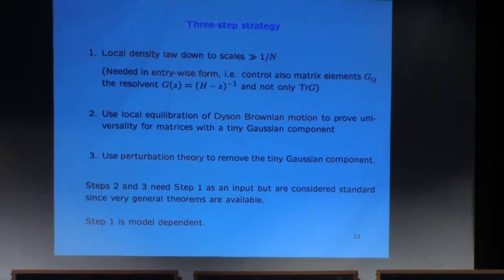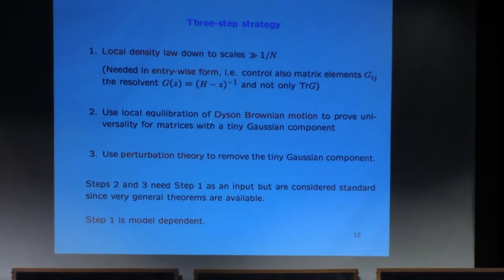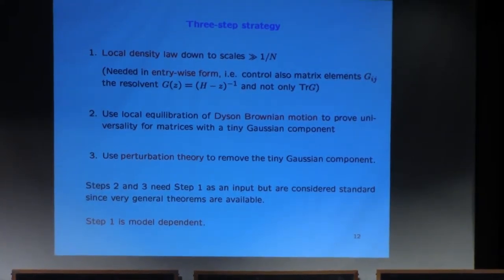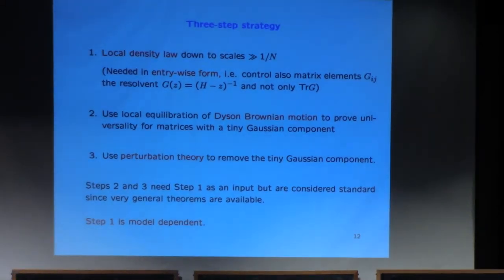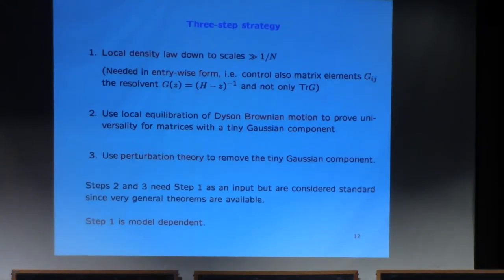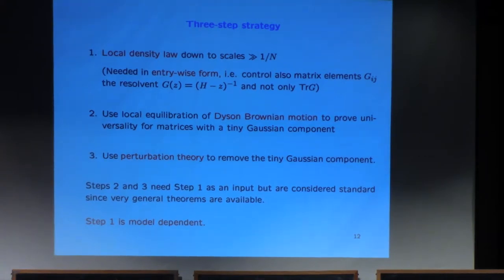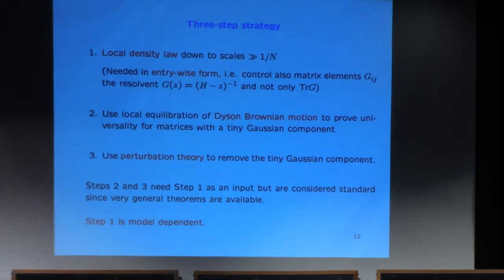The second step involves Dyson-Brownian motion. You take your Wigner matrix, add a tiny Gaussian component, and study this new matrix — the original Wigner matrix plus a Gaussian component, in a spirit similar to Johansson. Then you use the Dyson-Brownian motion, a stochastic coupled differential equation, to show that the original matrix plus a tiny Gaussian component does have the right local statistics. That's step two, and it's a separate theory.